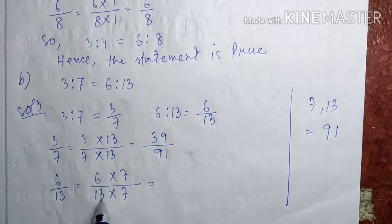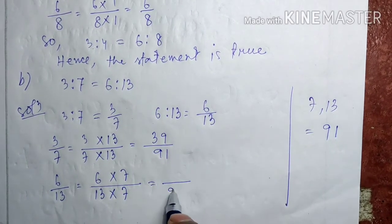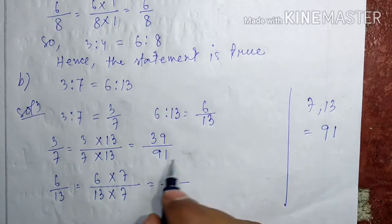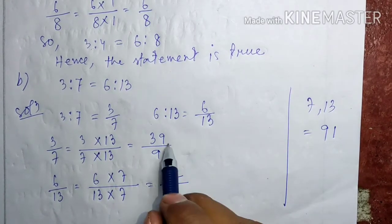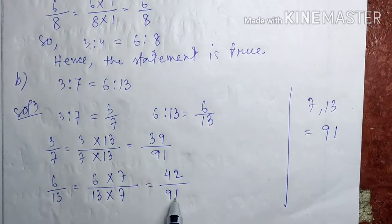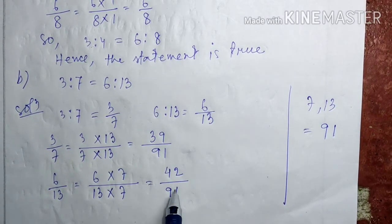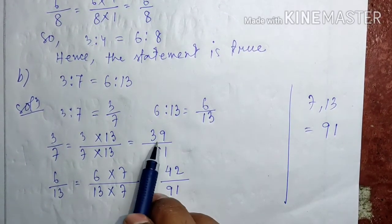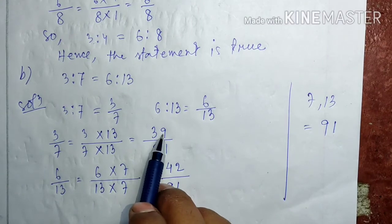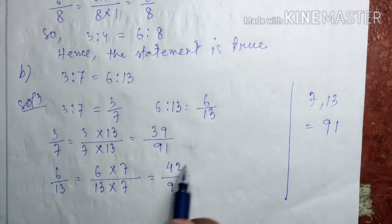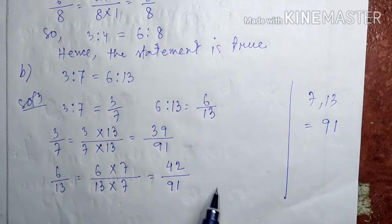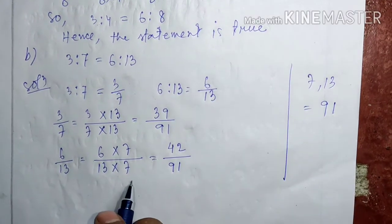13 into 7 is 91, 6 times 7 is 42. Now we can compare. Their denominators are the same now. This one is 39, this one is 42. So these two are not equal.